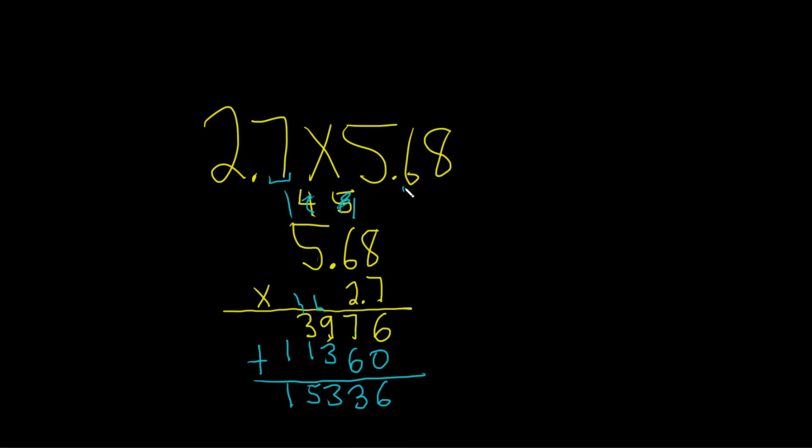There's 1 decimal place here. There's 2 decimal places here. So the total is 3 decimal places. You just add them up. So from here you go 3 places to the left. 1, 2, 3. There it is. So it's 15.336. That would be the final answer. I hope this video has been helpful.